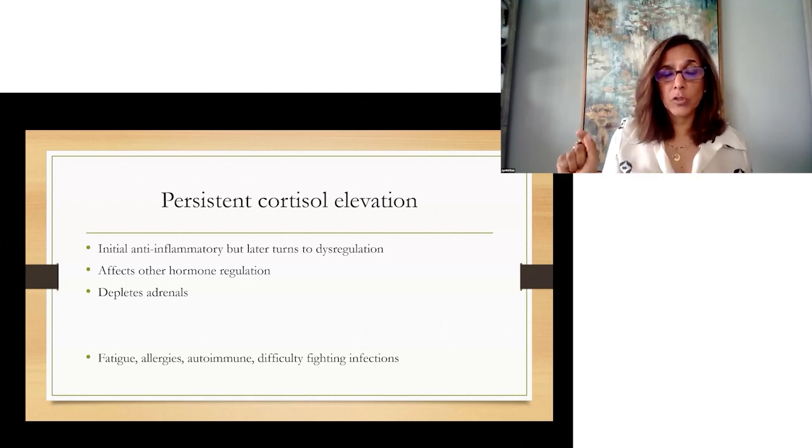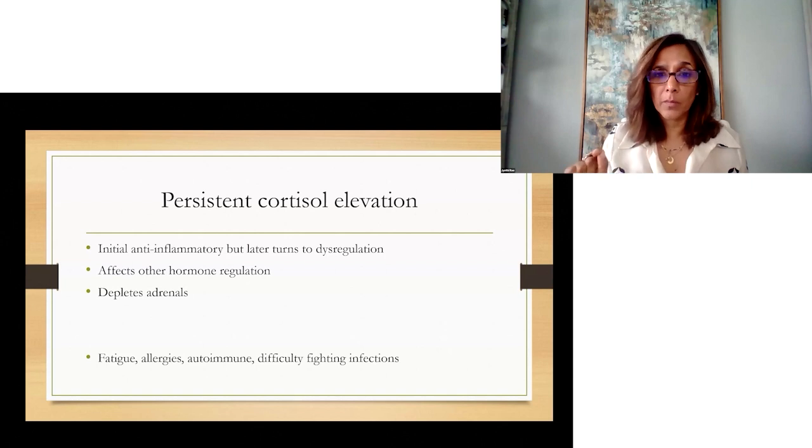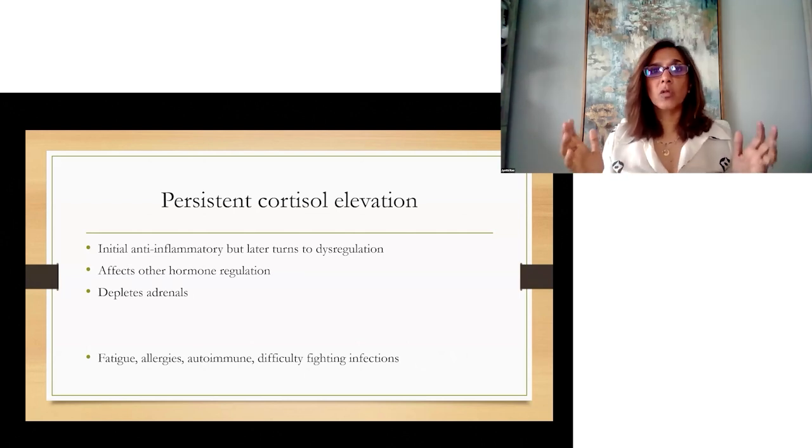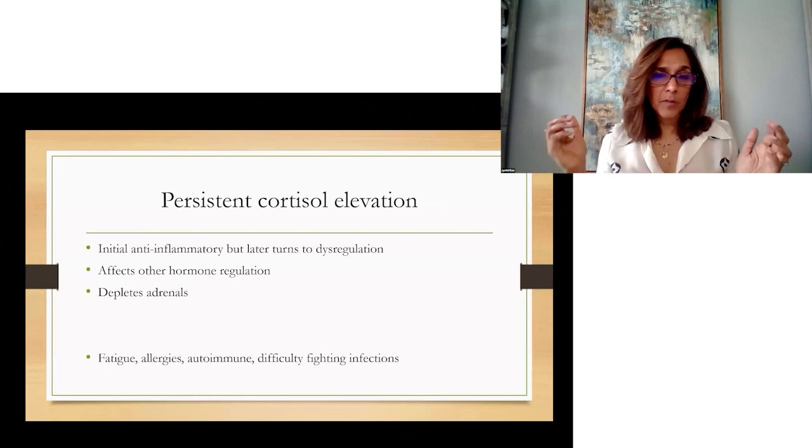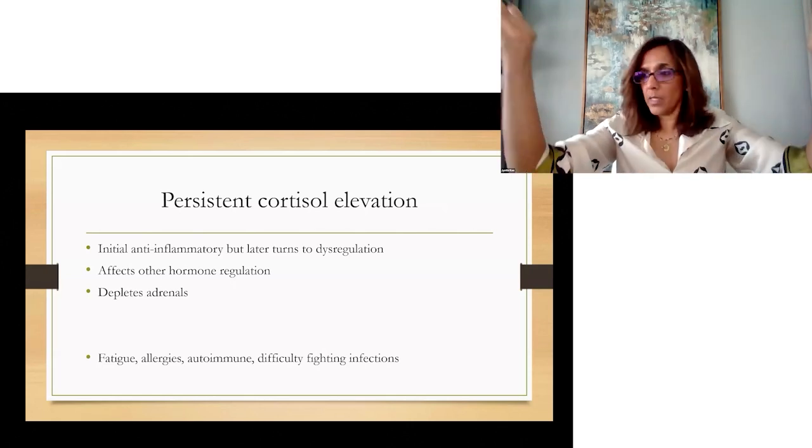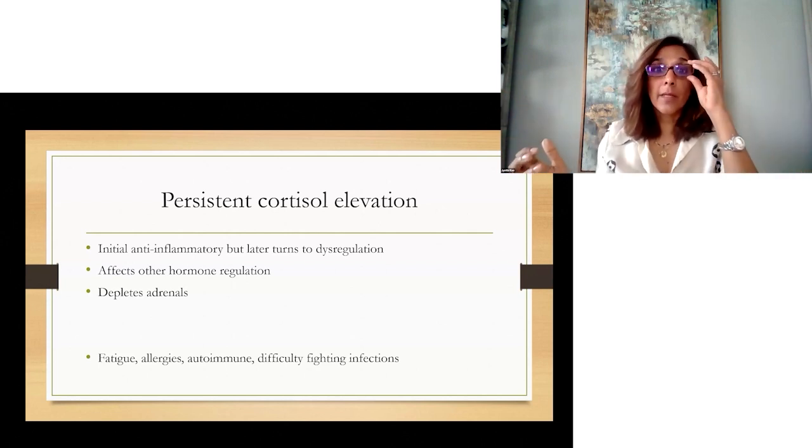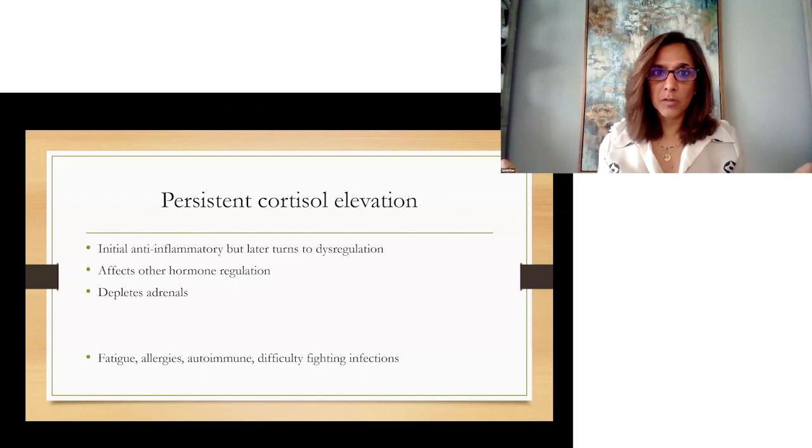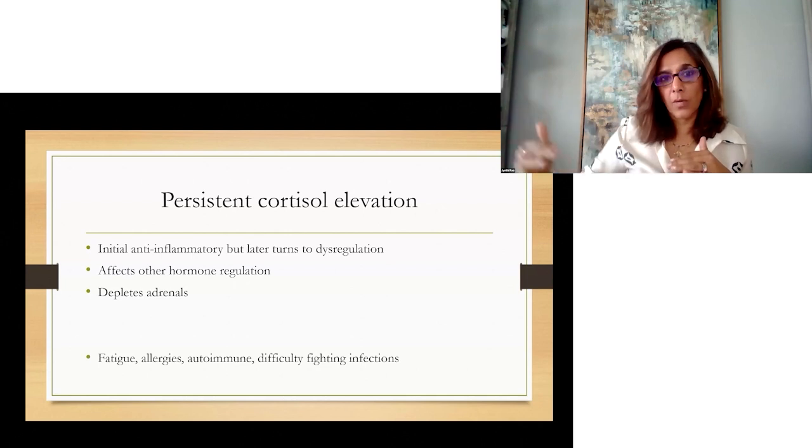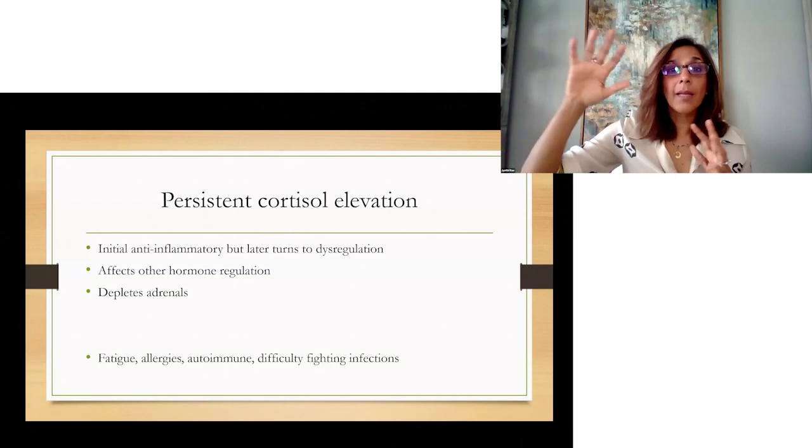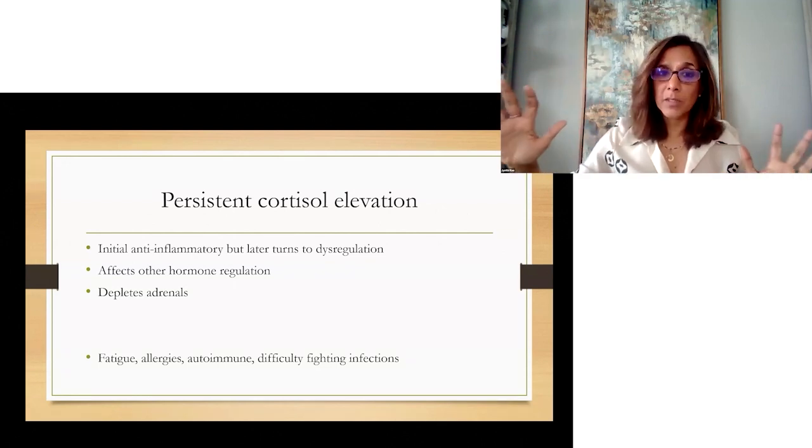Cortisol also, in addition to sugar regulation, has a lot of control over the immune system. Initially, when you have cortisol elevation, you are in an anti-inflammatory state. When women, their child is stuck under a car and the mom lifts the car up, that's a lot of adrenaline in her, and that's also cortisol that's protecting her spine and her muscles. So it's an anti-inflammatory initially, but if it's persistent, it turns into those dysregulations of difficulty controlling infections, difficulty with maybe allergies, and difficulty with autoimmune.